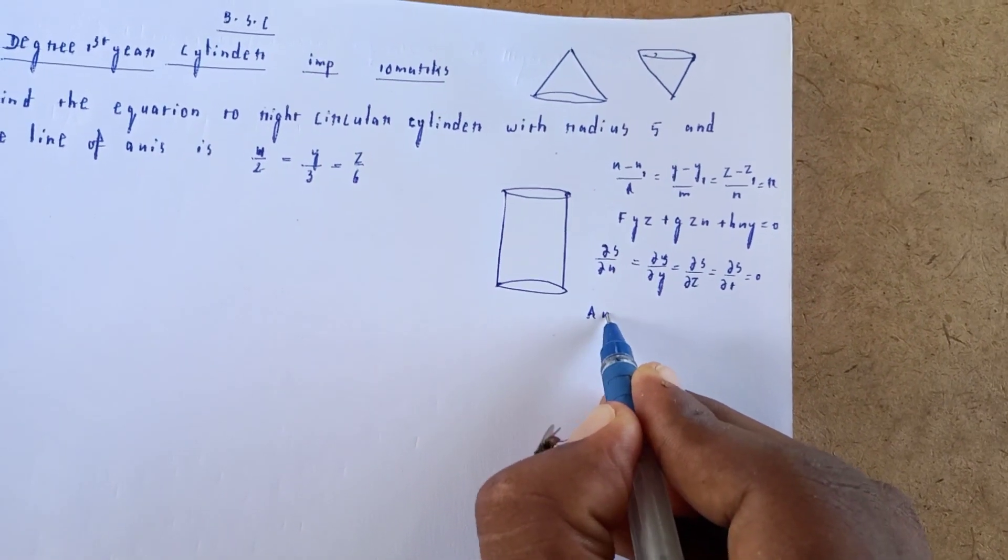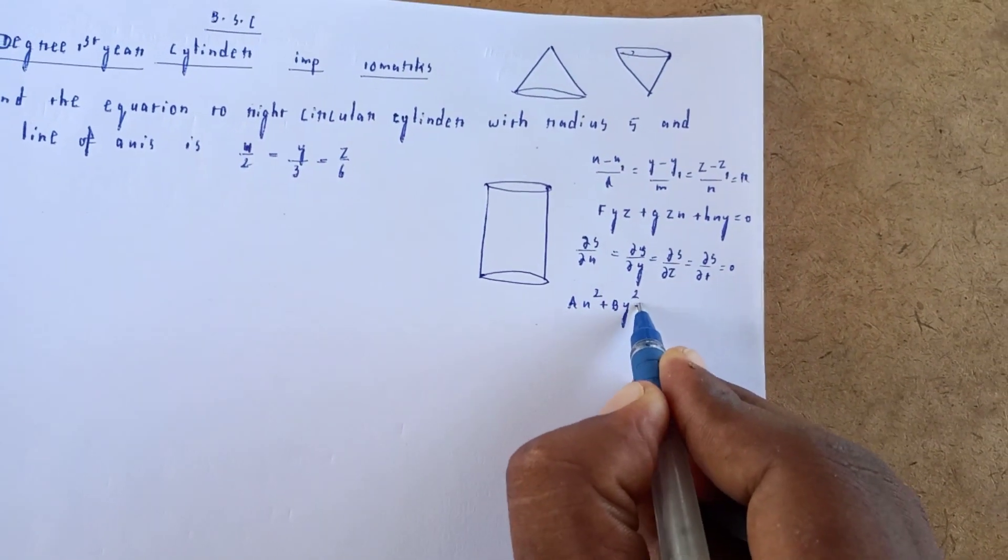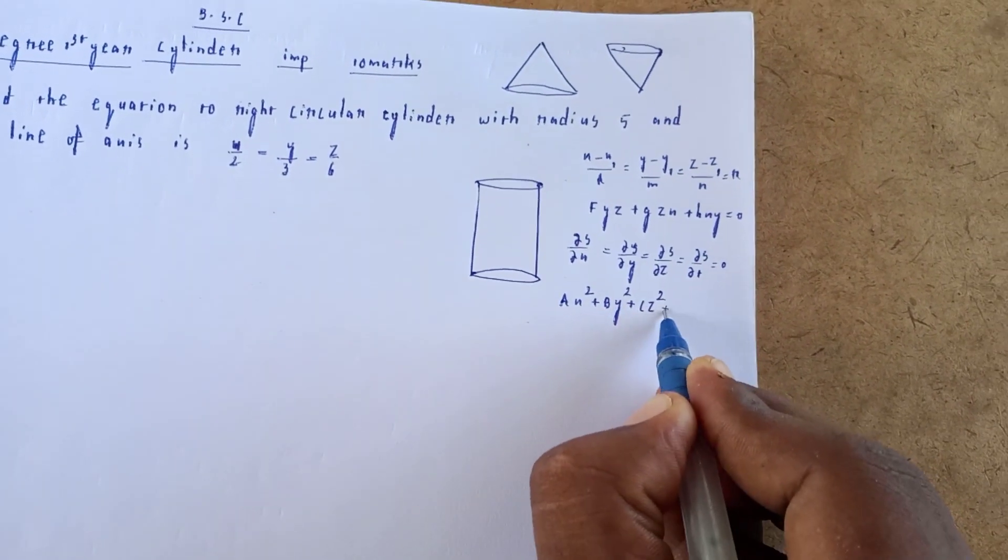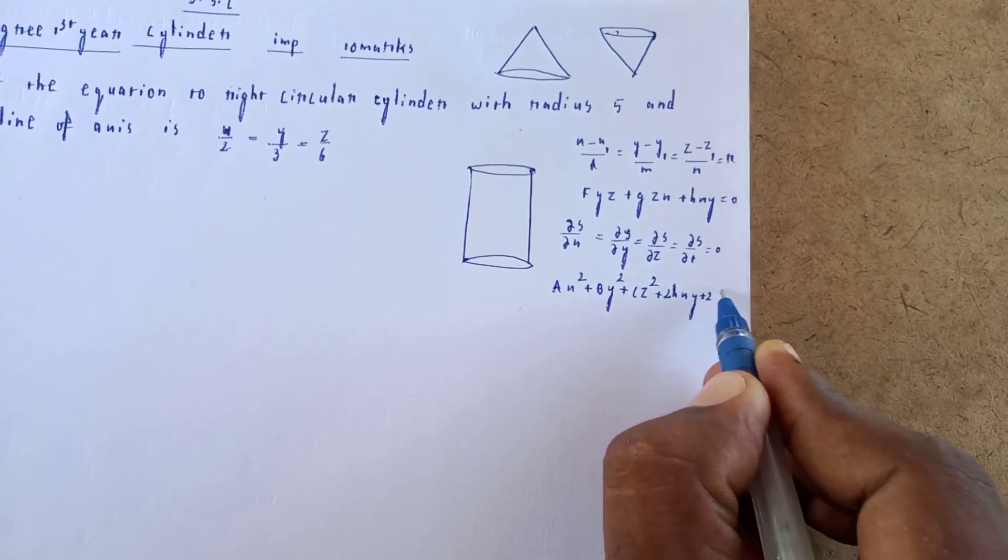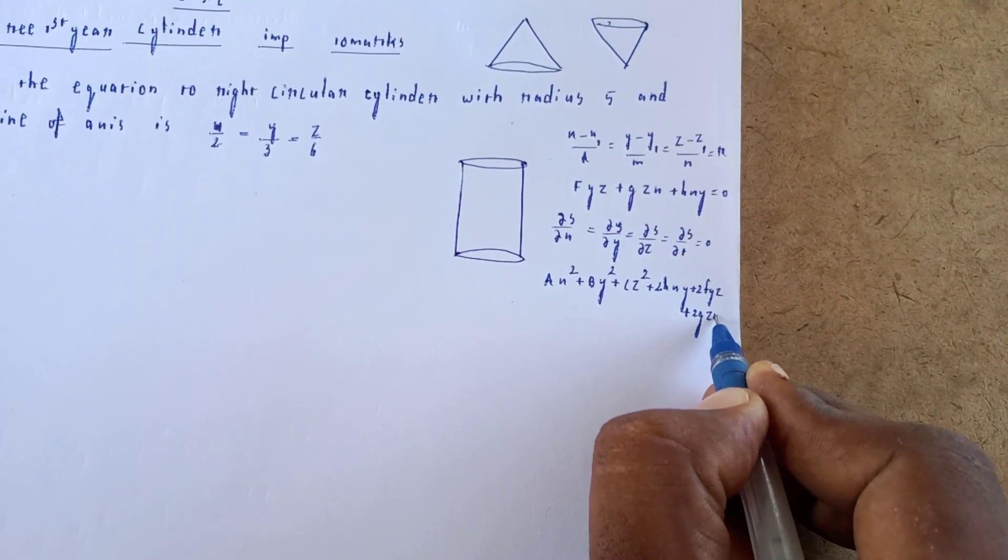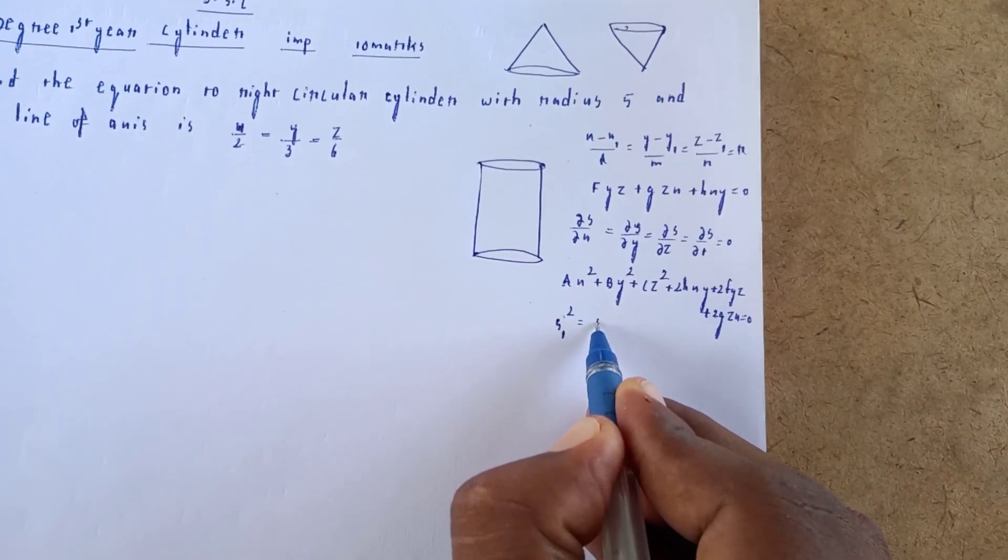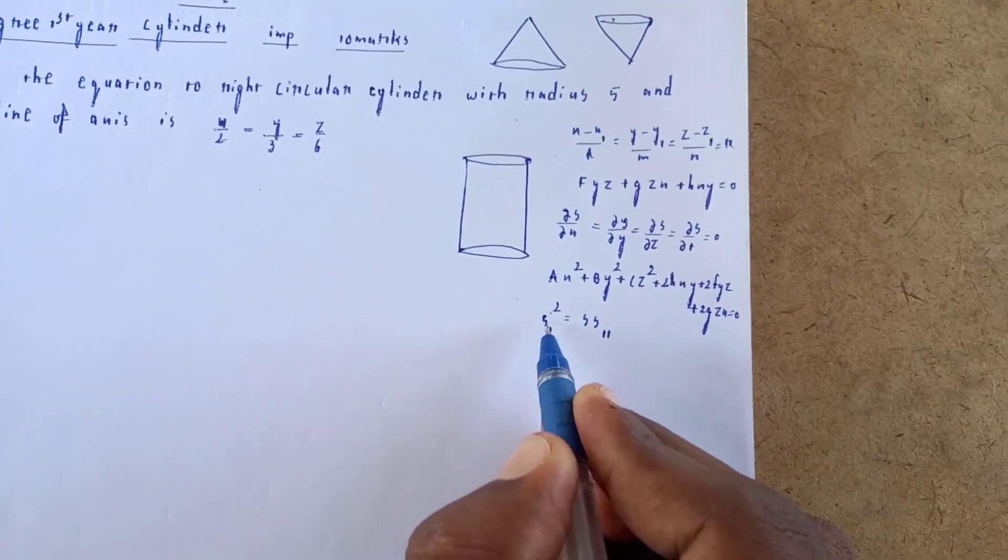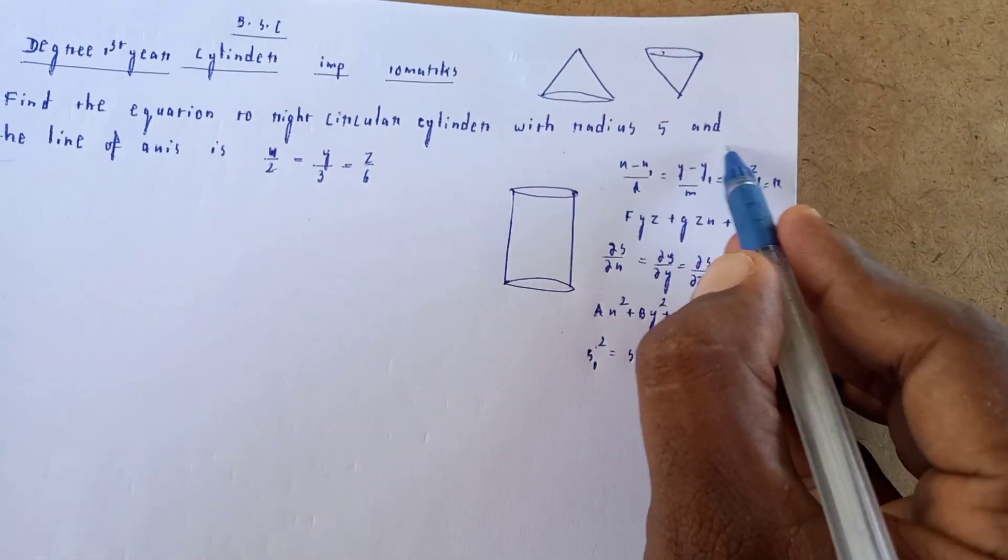The equation is ax² + by² + cz² + 2hxy + 2fyz + 2gzx = 0. S₁² = S₁₁S₁.